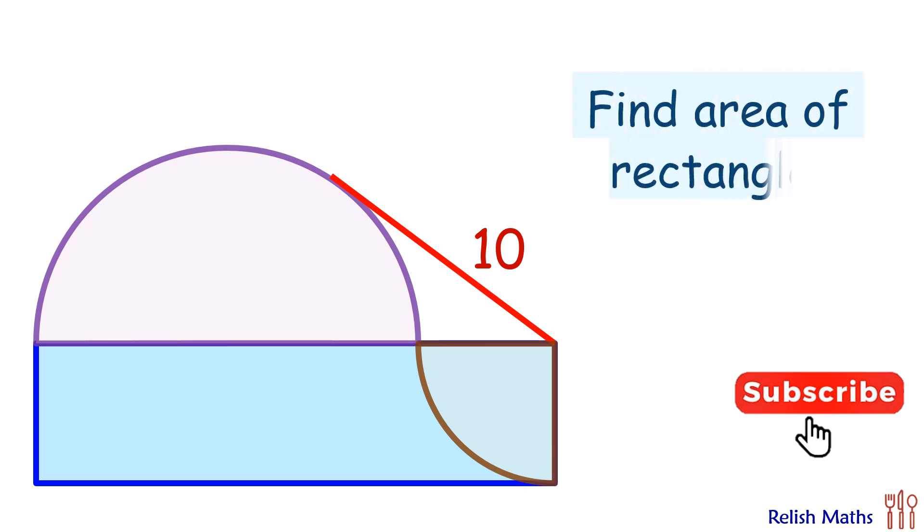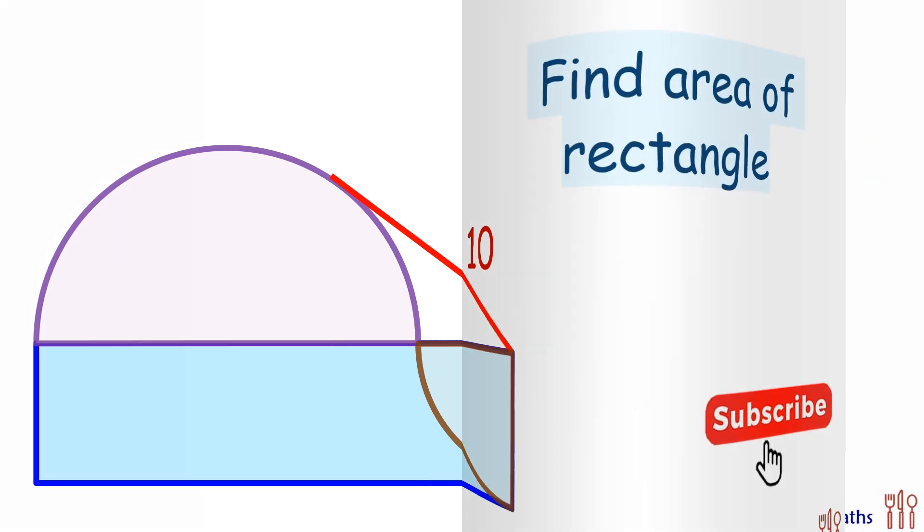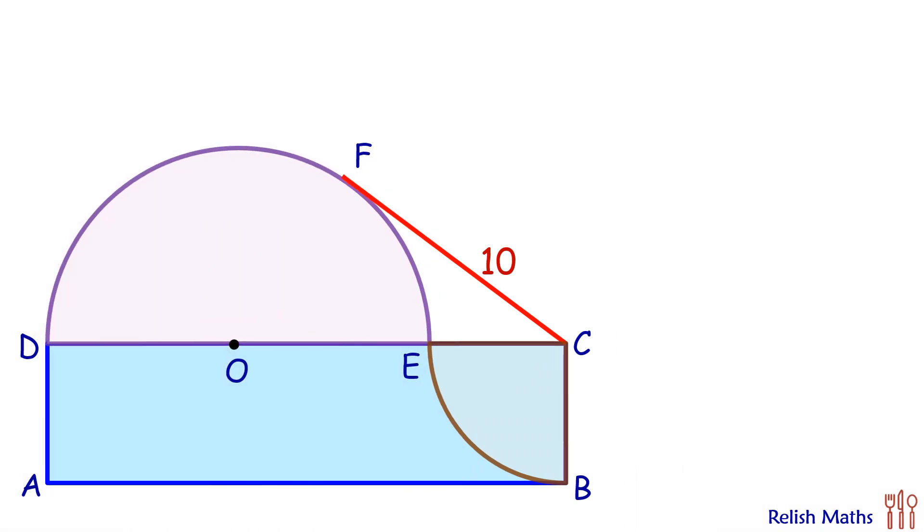The length of this tangent is 10 centimeters, and using only this data we have to find what is the area of the rectangle. To start with, let's first use the fact that CF is tangent, and we know that tangent is perpendicular to the radius.